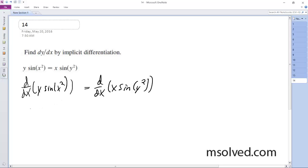All right, so what we end up with is y prime sine of x squared plus y times 2x cosine of x squared. It's equal to sine of y squared plus 2yy prime cosine of y squared x.